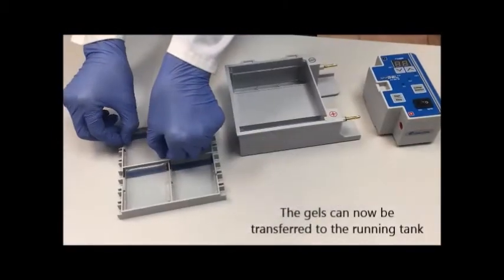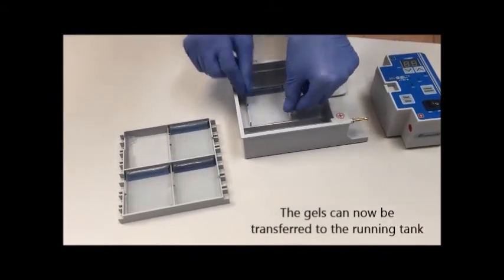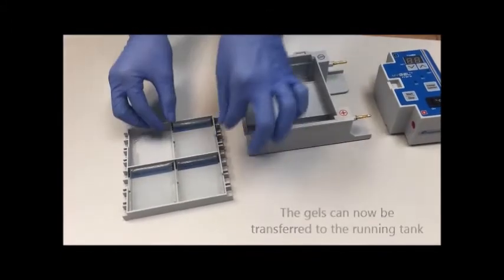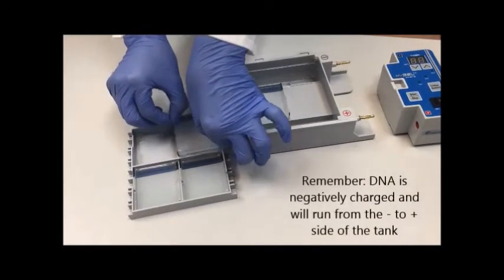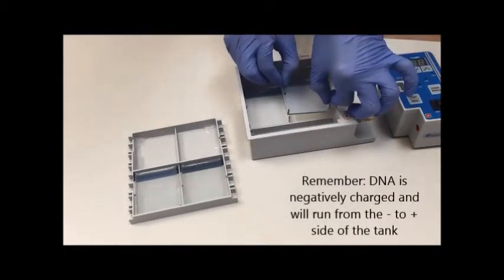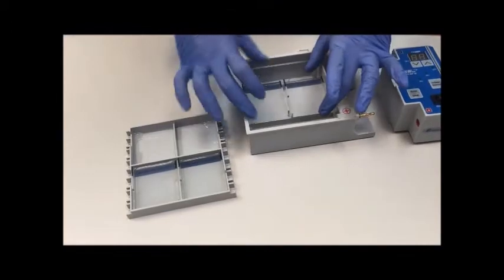The gels can now be transferred to the running tank. Remember to put the gels in the right orientation. The DNA will be running from the negative side to the positive side of the tank.